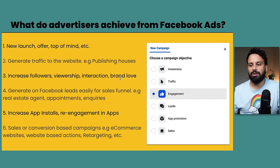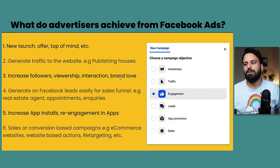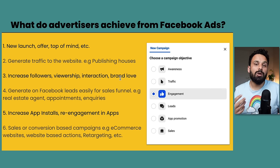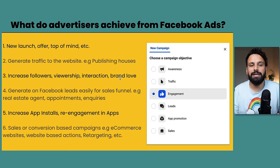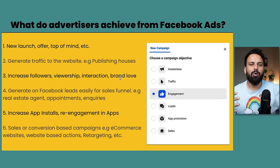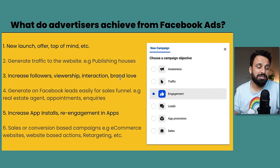The fifth objective is App Promotion. If you're a company with an app - like Amazon, Flipkart, Uber Eats, or any e-commerce or delivery platform - launching in a new market or wanting to increase installs, you use this objective and Facebook will try to promote your app and increase installs. Beyond just installs, some companies run re-engagement app campaigns - for example, if you have Uber Eats or Foodpanda on your phone but haven't used it for a while, they can run campaigns targeting only people who already have their app to make them order again.